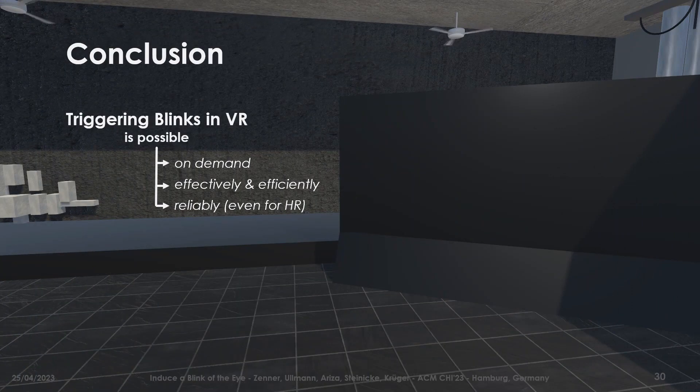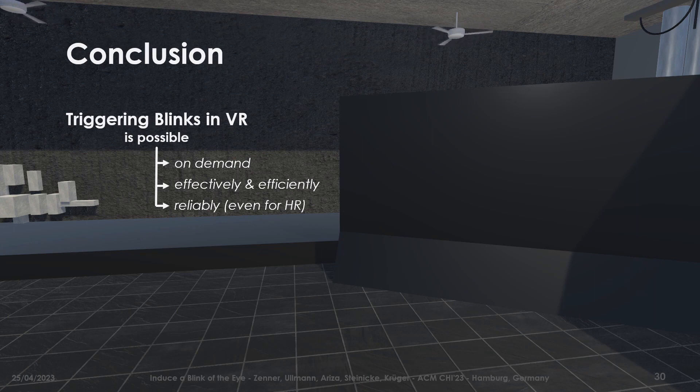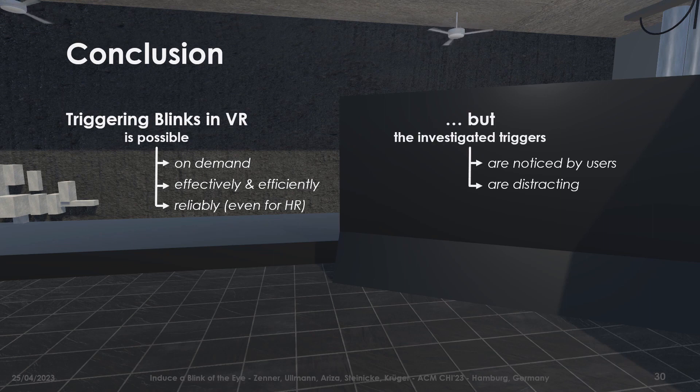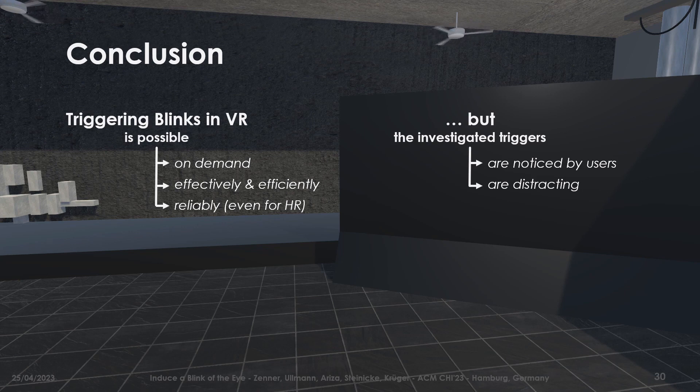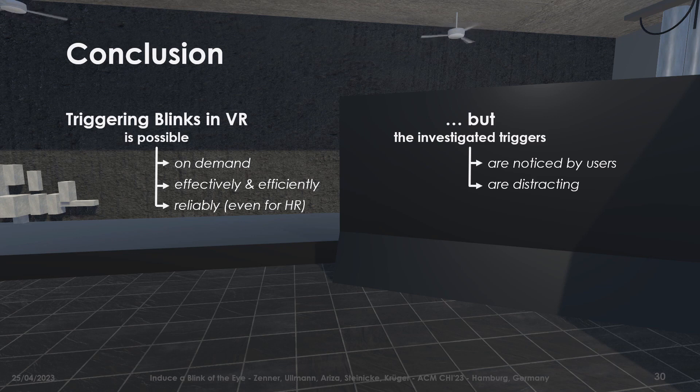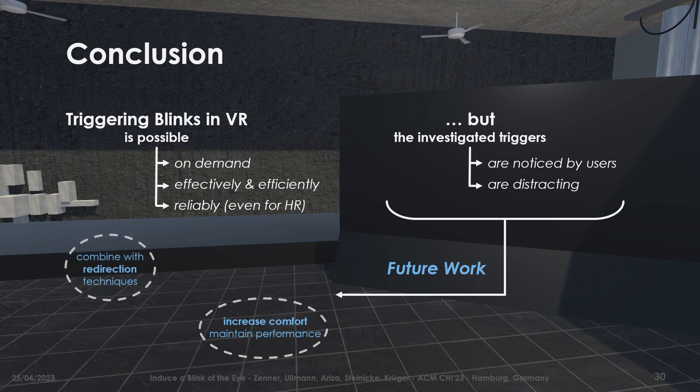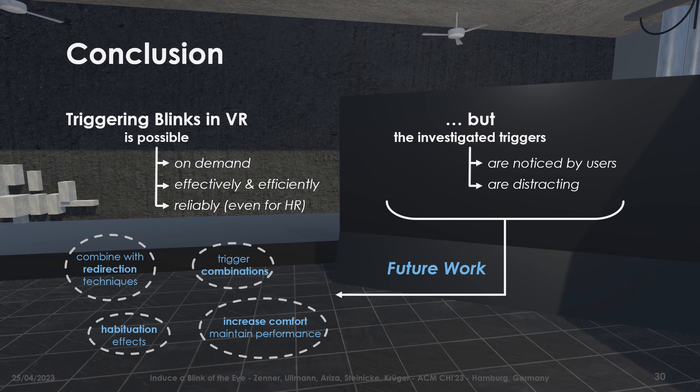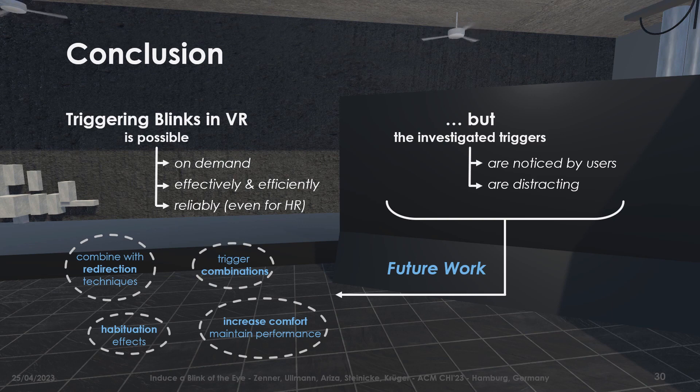In conclusion, we found that effectively and efficiently triggering blinks in VR is possible, even on demand and reliably during time-critical interactions like reaching. Yet we also conclude that presented triggers will almost certainly be noticed by users and are generally perceived as distracting, with different trigger methods leading to different levels of distraction. Given these findings, in future work it is important to study how triggers can be made more comfortable while maintaining triggering performance. For this, it seems worthwhile to combine different triggers, potentially each with reduced intensity, to study habituation effects and ultimately to investigate how redirection techniques and blink triggers integrate in practice.